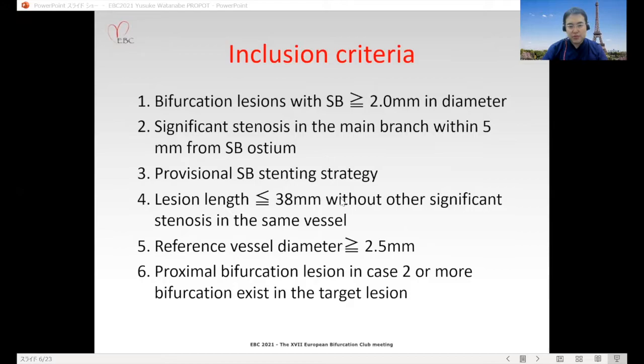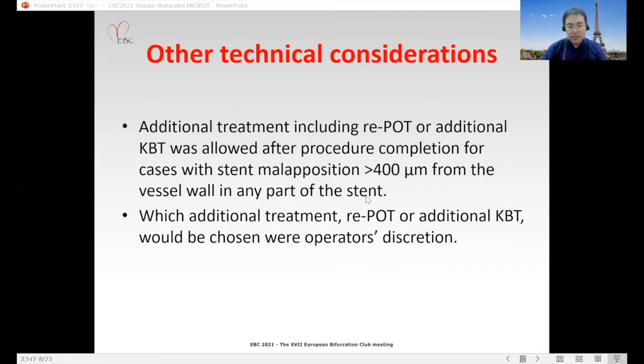This slide shows inclusion and exclusion criteria. Additional treatment, including re-POT or additional KBT, was allowed after procedure completion for cases with stent malposition over 400 micrometers from the vessel wall in any part of the stent.